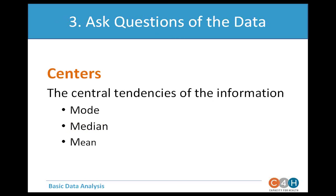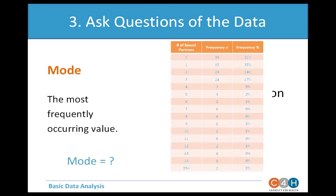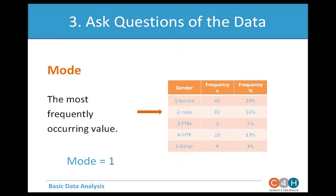Now that we've found how often things occur, we want to find the central tendencies: mode, median, and mean. The mode is the most frequently occurring value — same as the value with the highest frequency. Here the mode for number of sexual partners is 1, occurring 49 times — the highest frequency at 35%. When we look at gender, the mode is male — the most frequently occurring value on the gender variable.